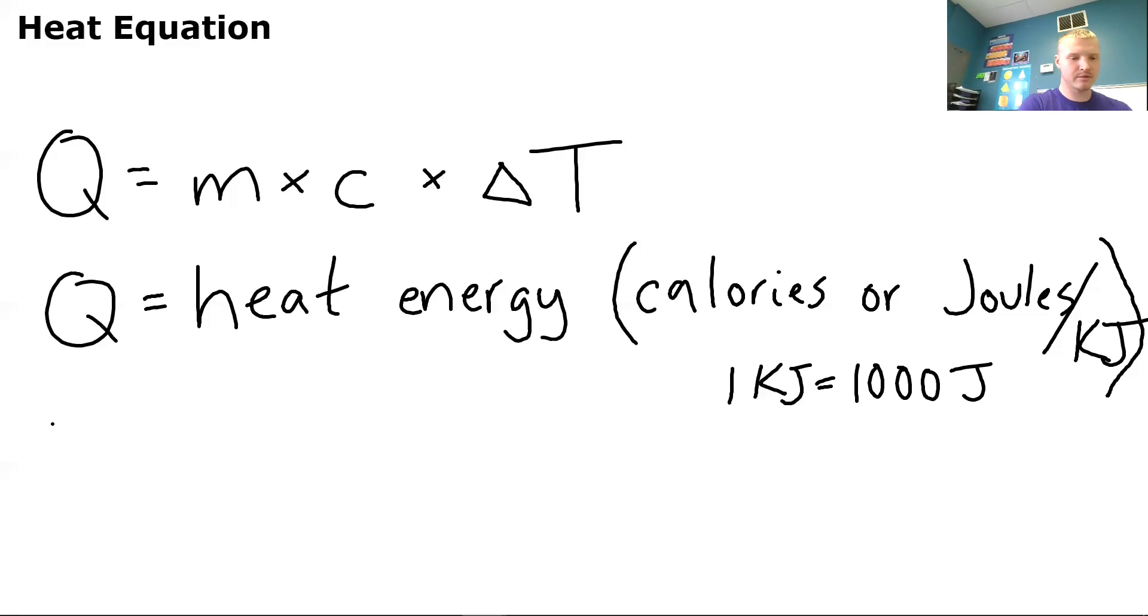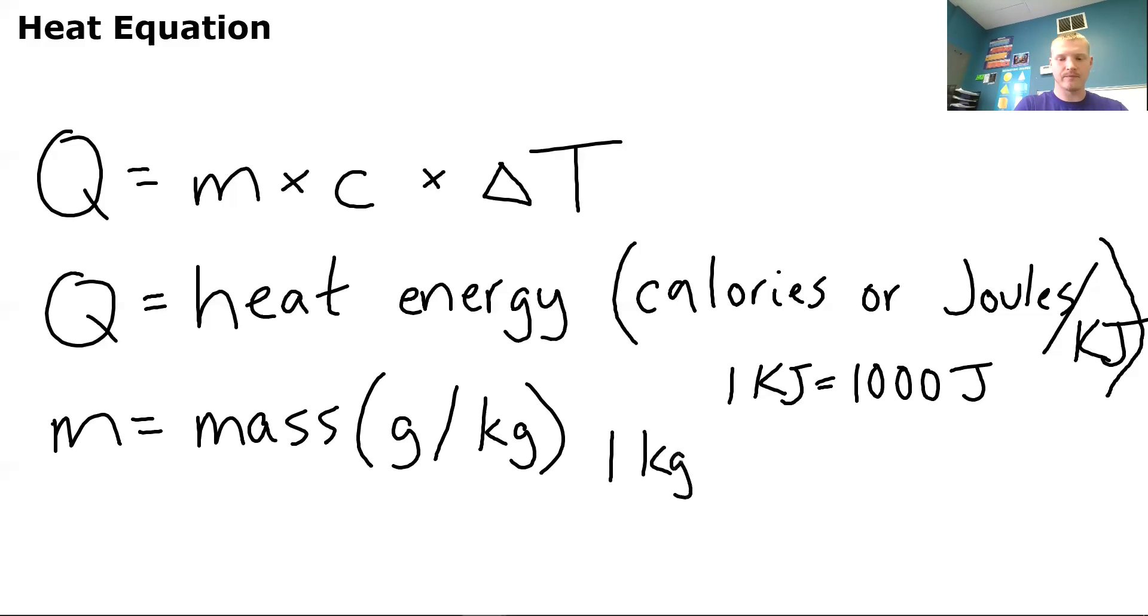Then we have M. M, our very common M. And that's going to stand for mass. So that's going to be the mass of our object. And that is measured in grams or kilograms. So just like I said in that example above, for every one kilogram, you have 1,000 grams.